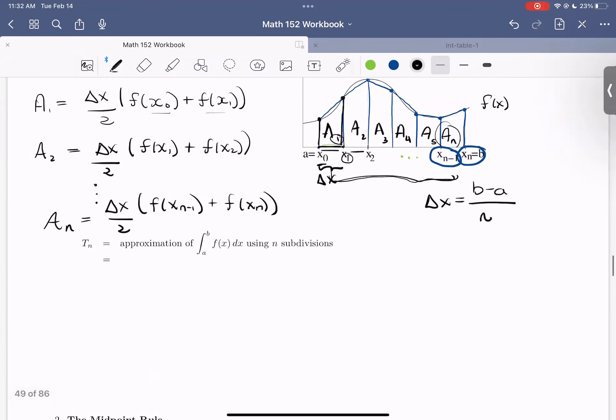So let's take a look at what that would start to look like. So approximating that integral would mean adding up the areas of our trapezoids. So that would look like A sub one plus A sub two all the way up through A sub n.